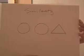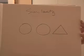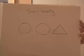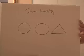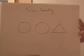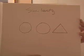Next is similarity — I always call this the Sesame Street principle. If we look at this, you're more likely to say those are two circles and a triangle than just three shapes. We tend to categorize things by their shape and separate them out.